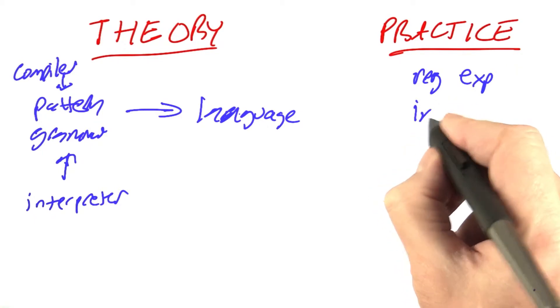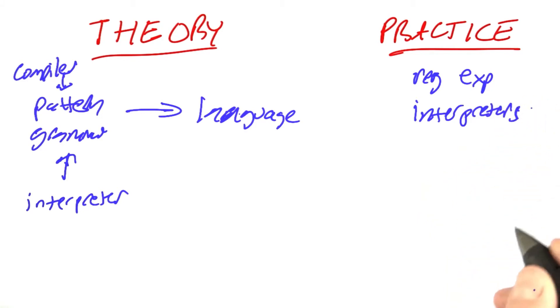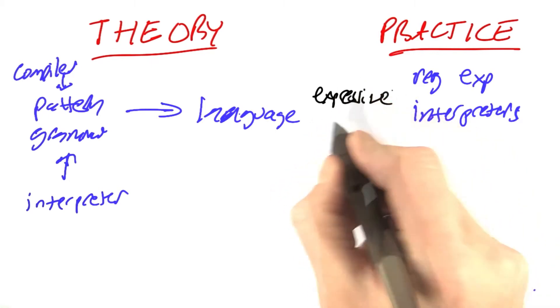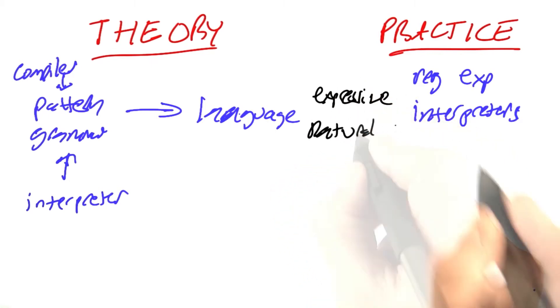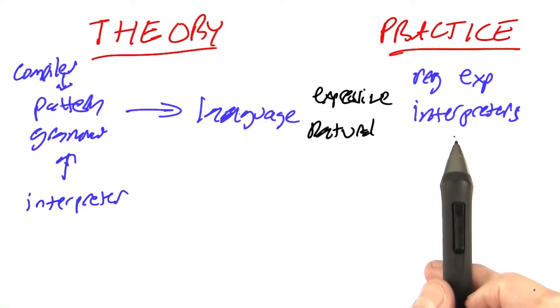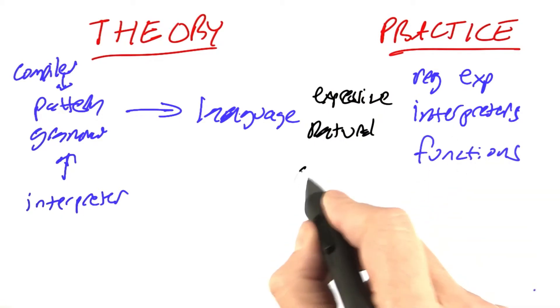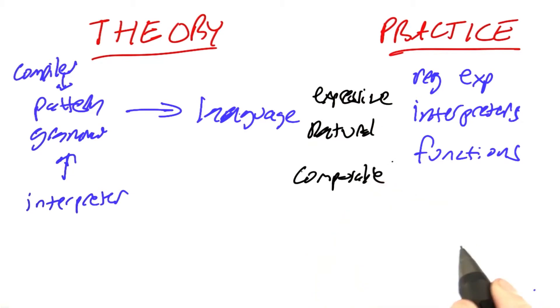We've learned that interpreters, including compilers, can be valuable tools and that they can be more expressive and more natural to describe a problem in terms of a native language that makes sense for the problem rather than in terms of Python code that doesn't necessarily make sense. We've learned functions are more composable than other things in Python.